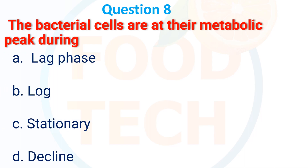Bacteria cells are at their metabolic peak during: A. Lag phase, B. Log phase, C. Stationary phase, D. Decline phase. The answer is B: Log phase.